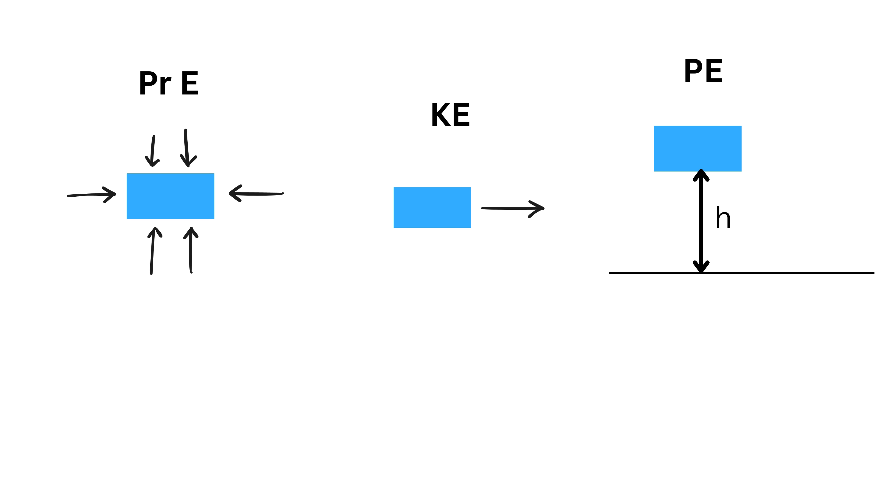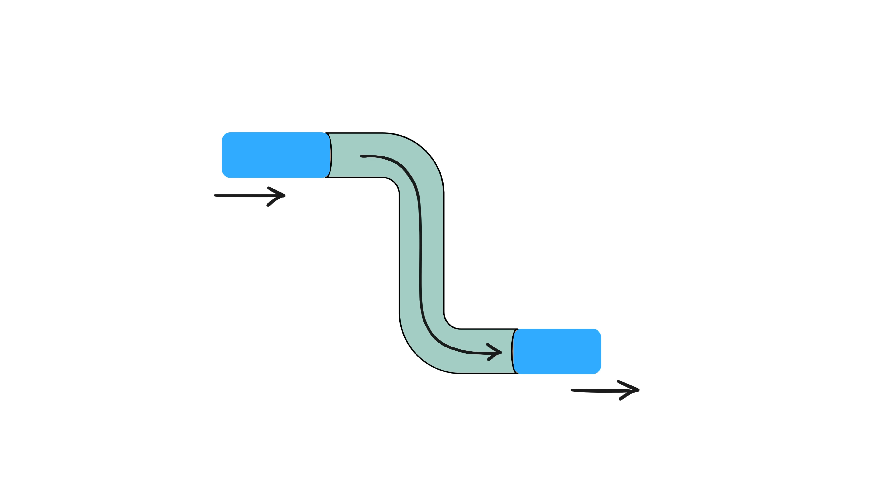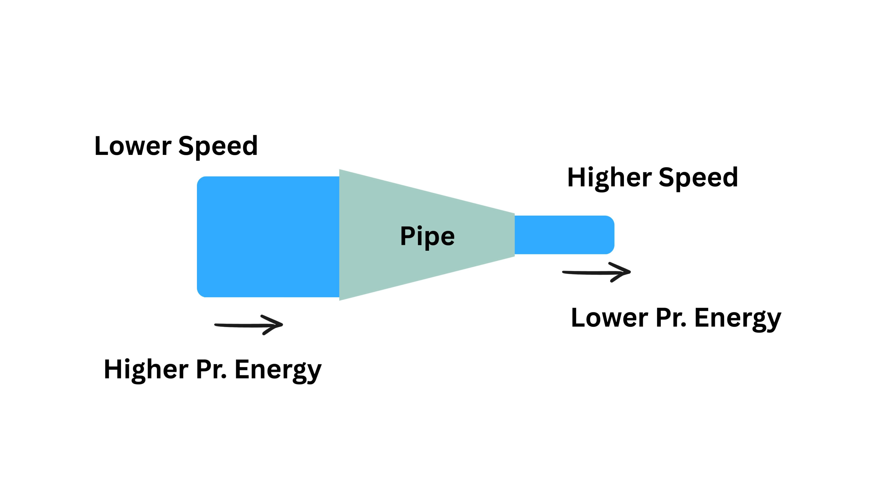Bernoulli's theorem says that the total energy stays the same as the fluid moves, it just shifts between these forms. When water flows from a higher point to a lower one, it speeds up as it loses height. And if the fluid stays at the same height, then the faster it moves, the less pressure energy it has, because when the fluid speeds up, it uses some of that energy to move.